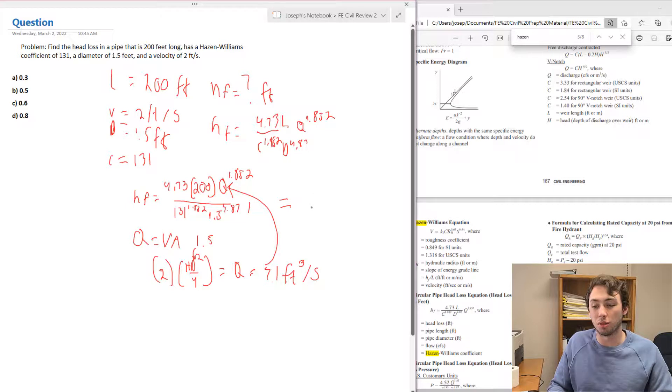This should come to a head loss total of 0.594 feet using this Hazen-Williams equation. We can see that C, 0.6, is going to be the closest answer, so we're going to select C for this one.